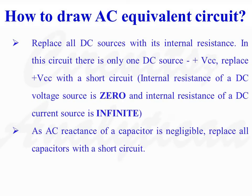How to draw the AC equivalent circuit? For any circuit, to draw its AC equivalent circuit, replace all DC sources with their internal resistance. In this circuit, there is only one DC source. The DC voltage source VCC is replaced with a short circuit, as the internal resistance of a voltage source is zero. In the case of a current source, the internal resistance is infinite, so replace that current source with an open circuit.